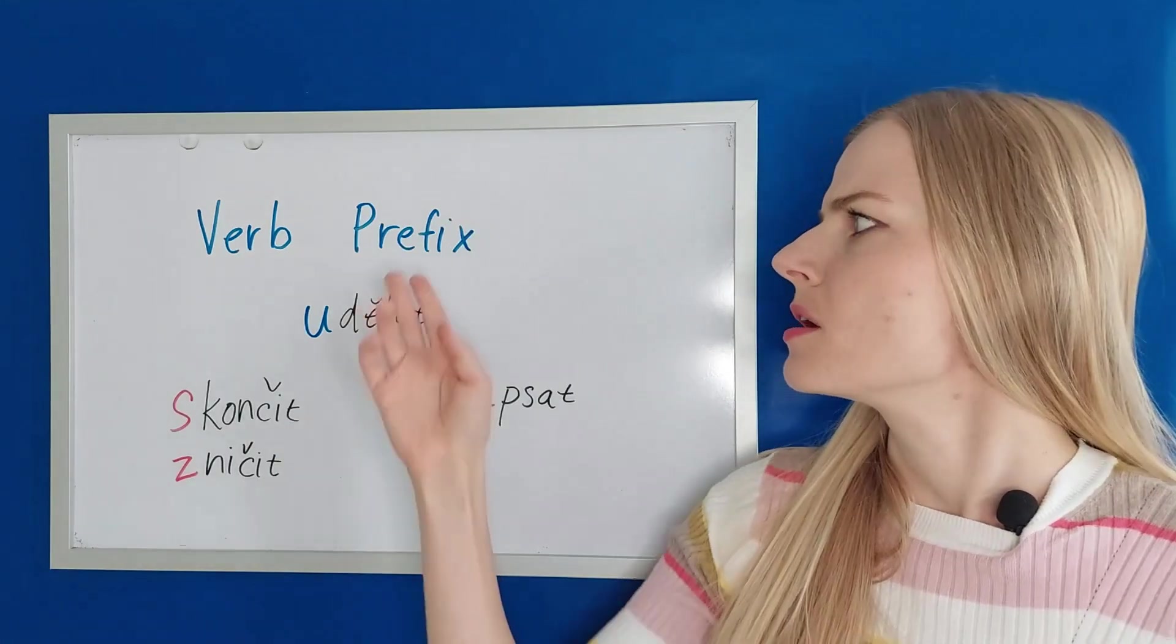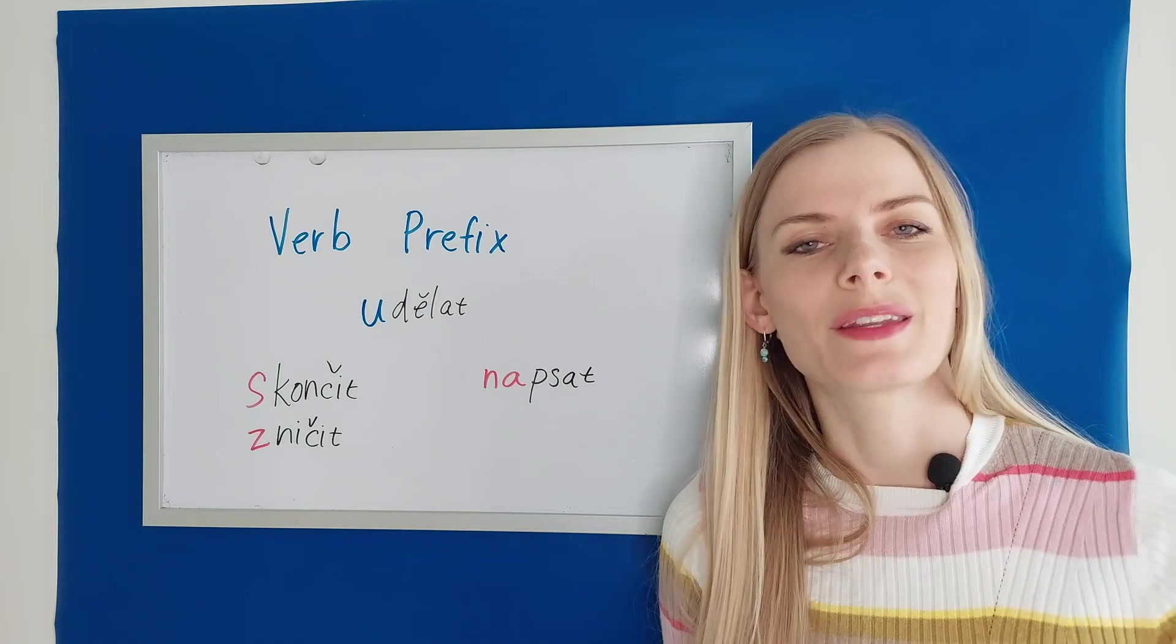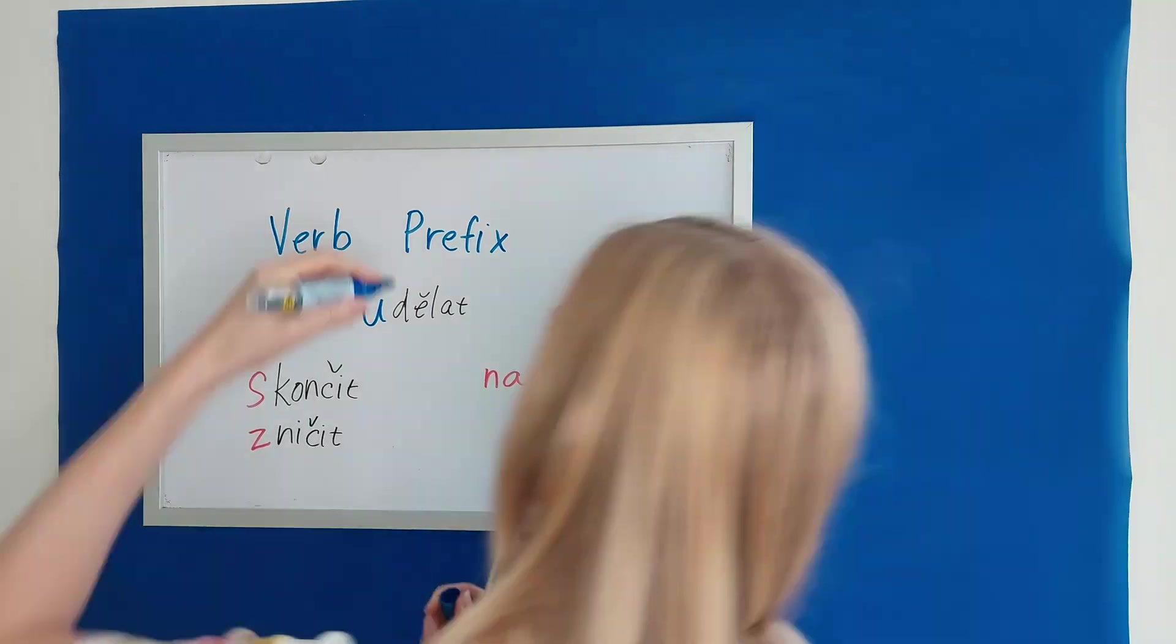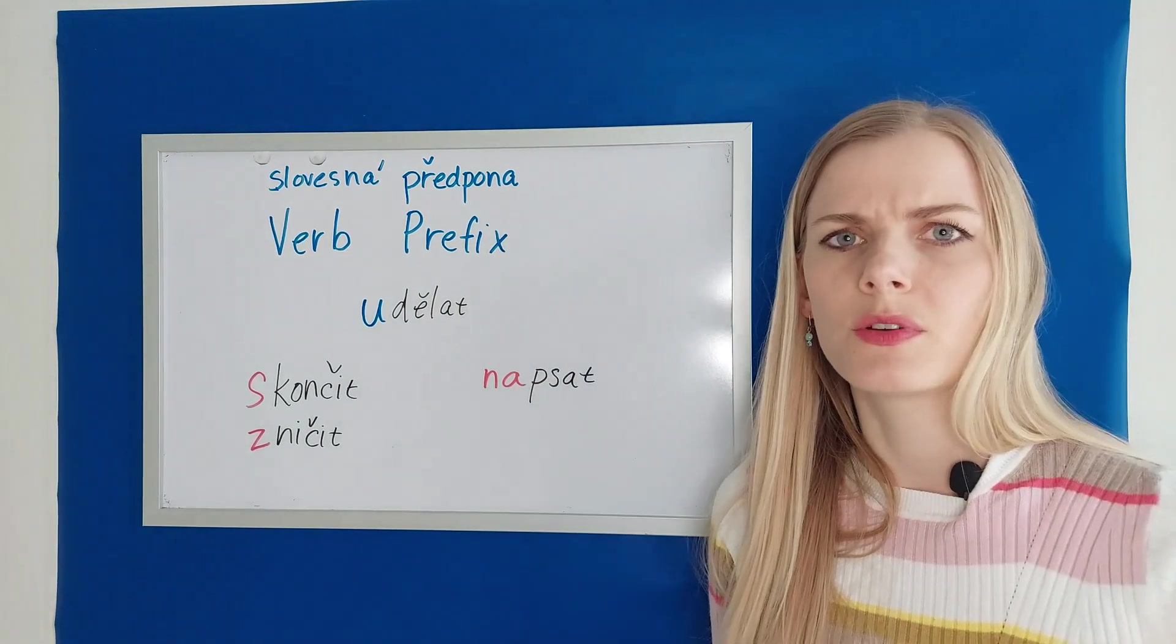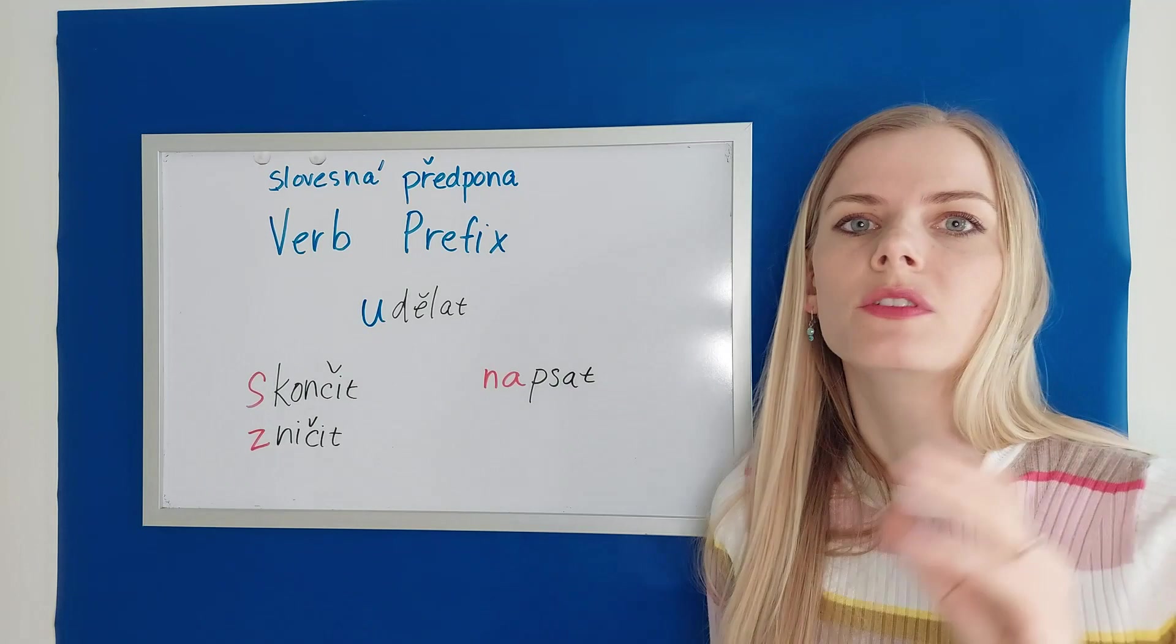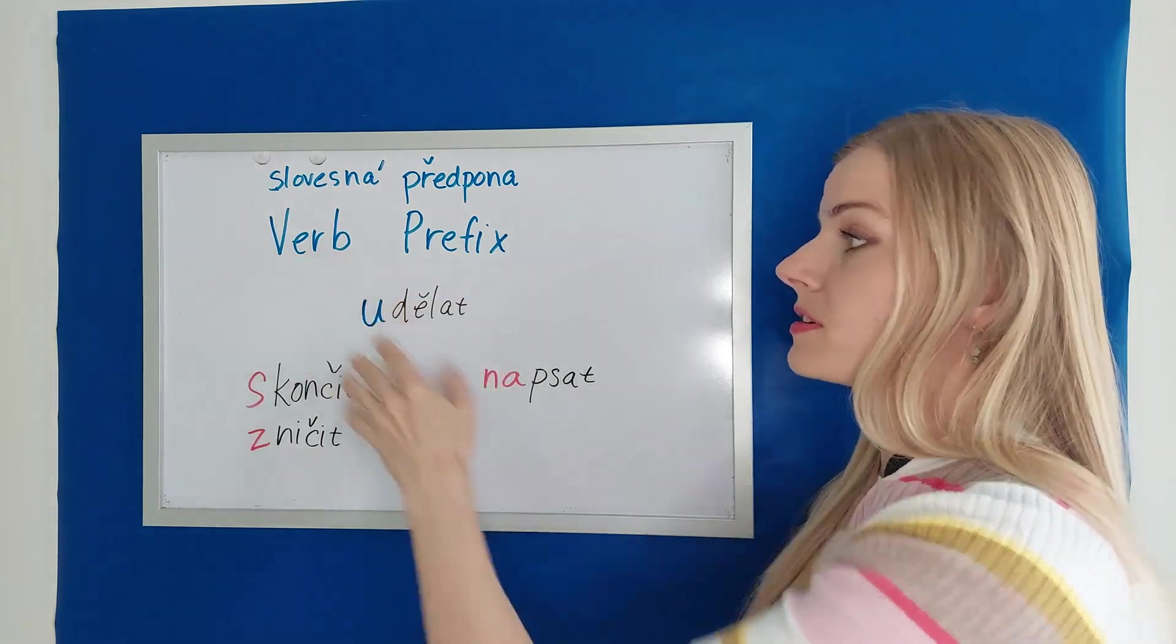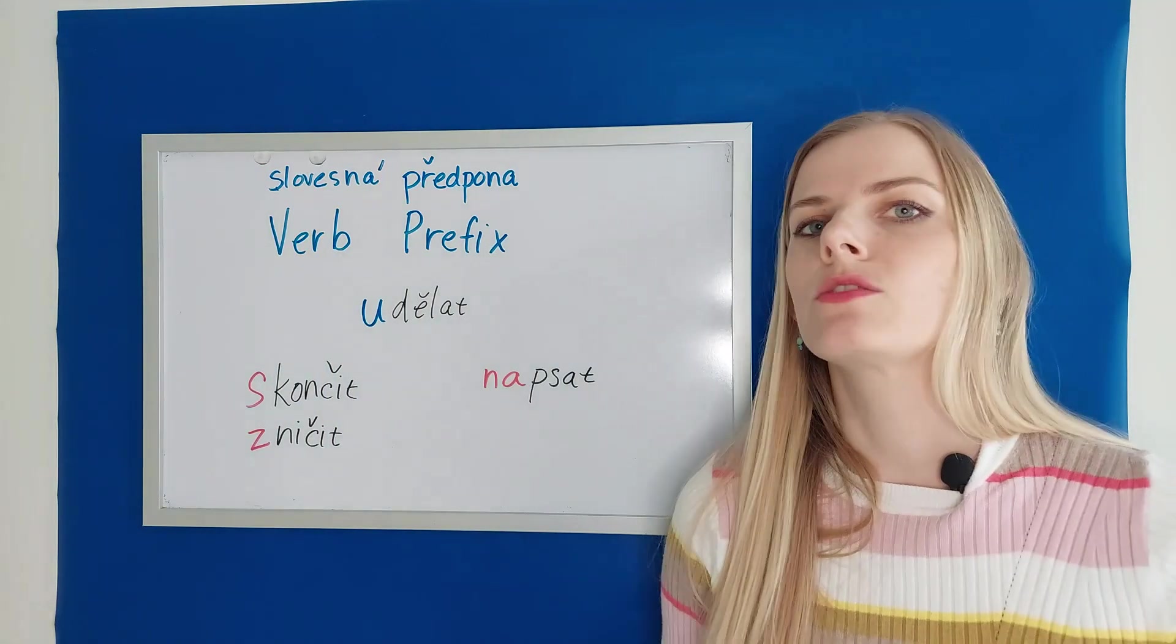And by the way, do you know how to say prefix in Czech? We can say prefix as well, but it's předpona. Předpona is a prefix. Any kind of prefix. It could be prefix of an adjective, prefix of a noun, and the verb prefix. Verbal prefix is slovesná předpona.